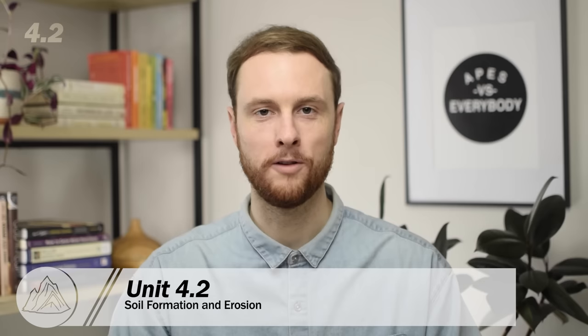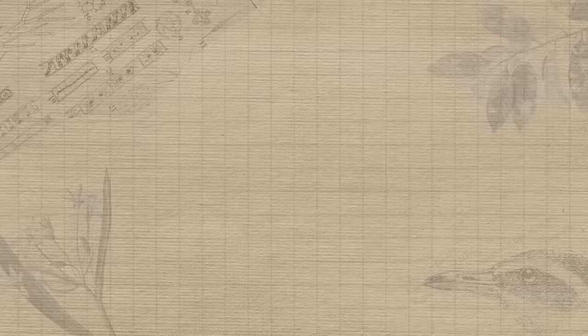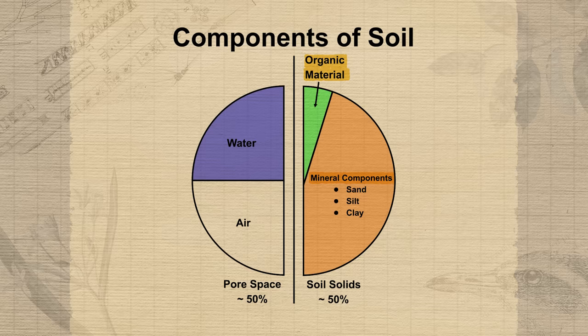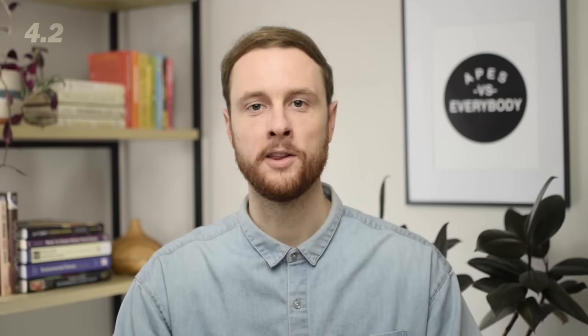On topics 4.2 and 4.3, we'll take a look at the most misunderstood and underappreciated topic in all of APES — and that's soil, not dirt. Soil is a complex mixture of tiny particles of weathered rocks such as sand, silt, and clay, but it also has organic materials such as living microbes or decomposers and non-living organic material like decomposing leaves and animal waste. Soil is also full of empty space called pore space, which allows oxygen and water to fill the soil so plant roots can access what they need to grow.